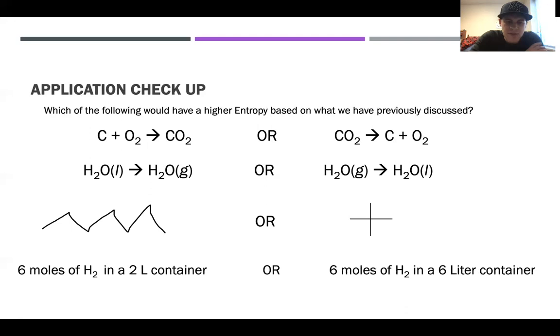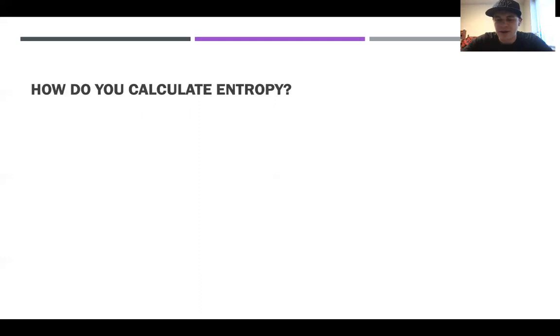And then the last one is comparing six moles of hydrogen gas in a two liter container comparing that to six moles of hydrogen gas in a six liter container. So pause the video and compare those two and then come back when you're ready. Okay. So we talked about the example of me and my roommate, once he left, once I had more volume, more space, more places to put things, that's when chaos and disorder ensued. So the example with the higher volume, the six liters is going to have the higher entropy. So now moving on from that, if you have more questions, just review that last slide and check out Dr. Mortensen's lectures or YouTube or something, because that's all that I have for the kind of conceptual stuff, but now for the math of it, how to calculate entropy.